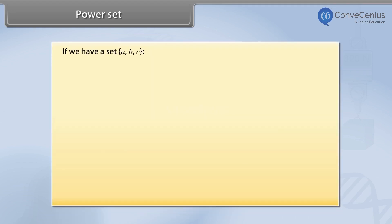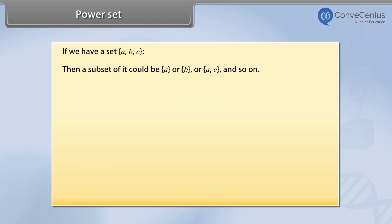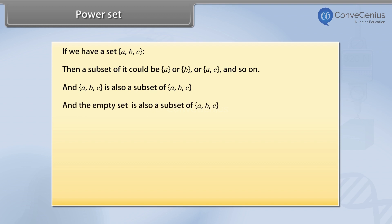Power Set. If we have a set A, B, C, then a subset of it could be A, or B, or A, C, and so on. A, B, C is also a subset of A, B, C. And the empty set is also a subset of A, B, C.